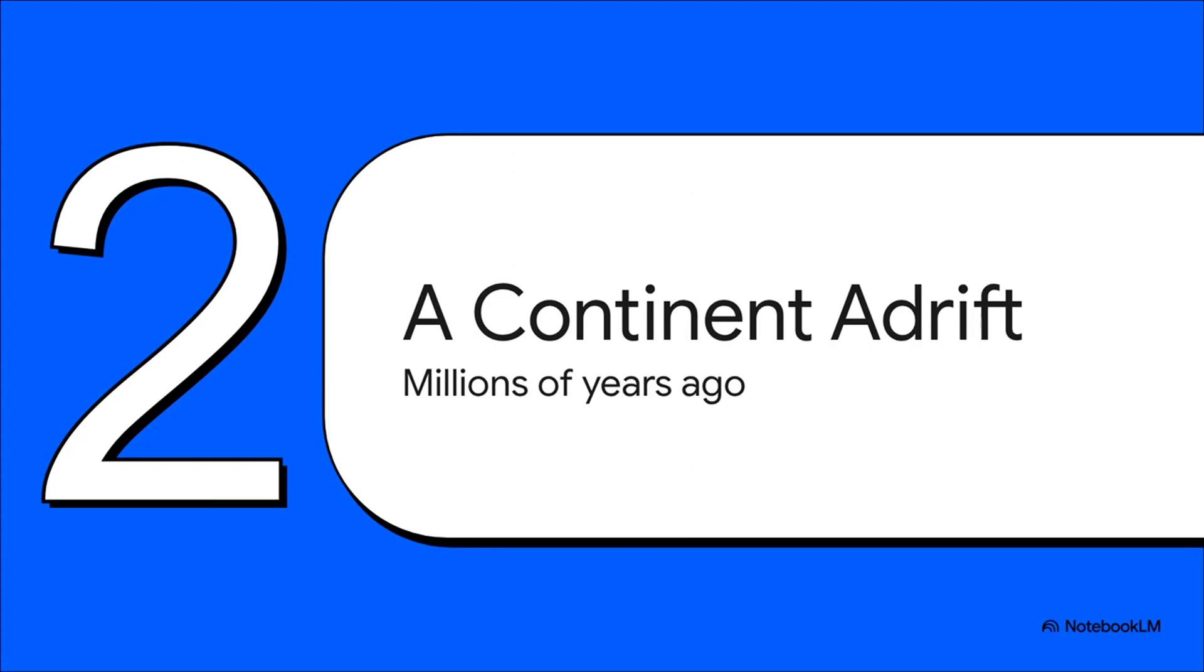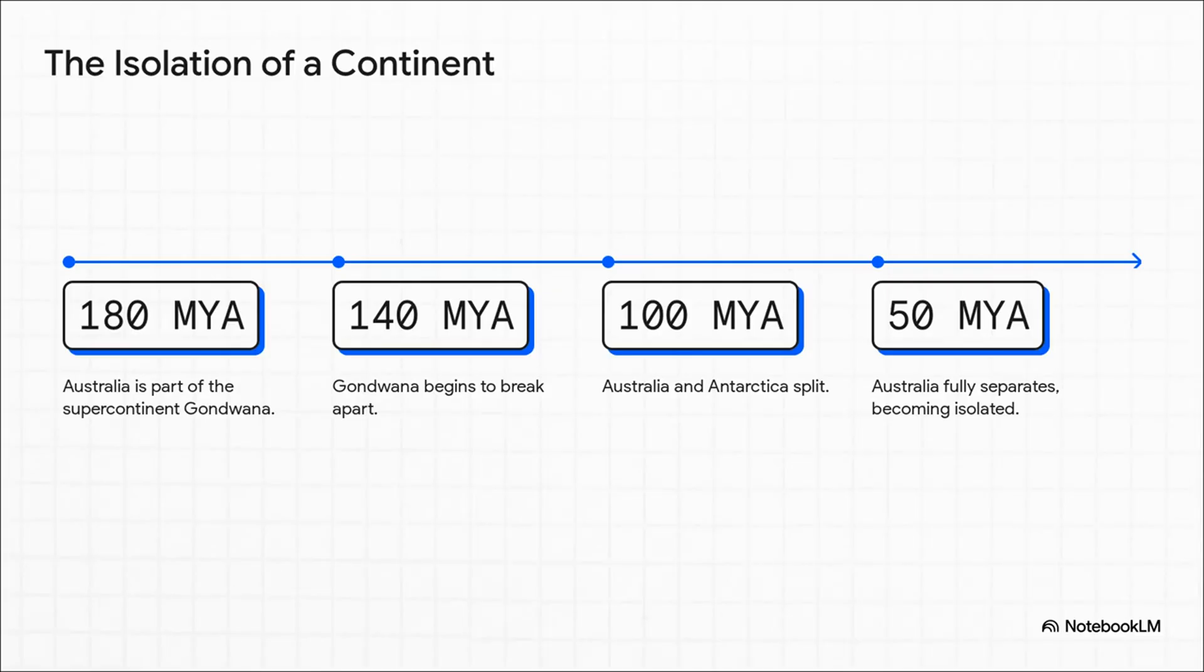To really understand why, we've got to turn back the clock way, way back. The story of Australia's one-of-a-kind wildlife is really a story about geology and deep, profound isolation. For millions of years, Australia was connected to other landmasses in the giant supercontinent Gondwana. But then, things started to drift apart. Around 100 million years ago, Australia split from Antarctica. And by 50 million years ago, it was completely on its own. A giant, floating island continent.